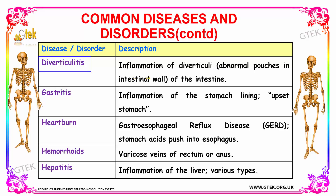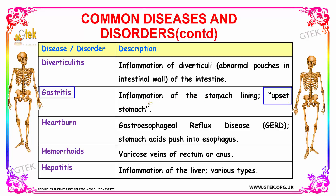Diverticulitis is the inflammation of the diverticuli — the abnormal pouches in your intestinal wall. If abnormal pouches are present without inflammation it is diverticulosis; if there is inflammation in that condition, it is known as diverticulitis. Gastritis is the inflammation of the stomach lining, also known as upset stomach in common language.